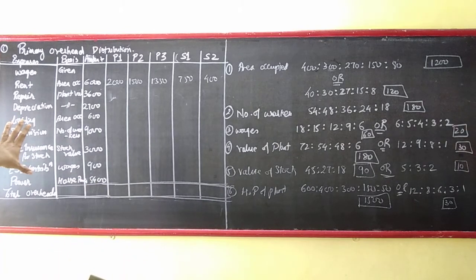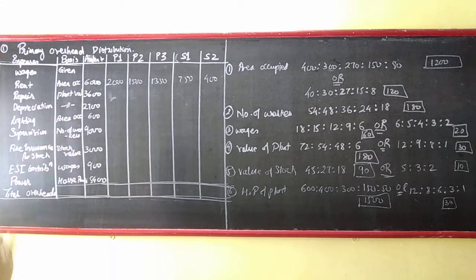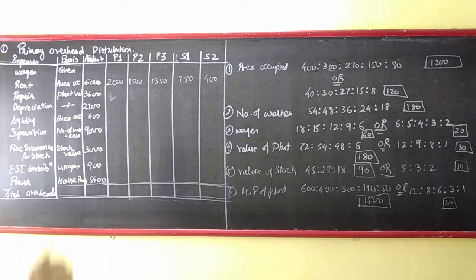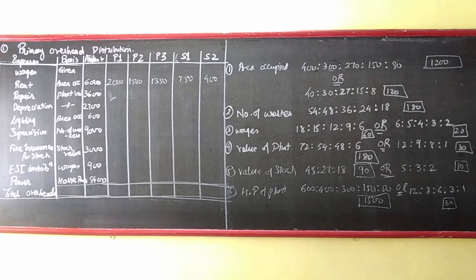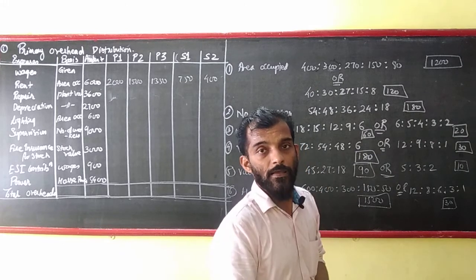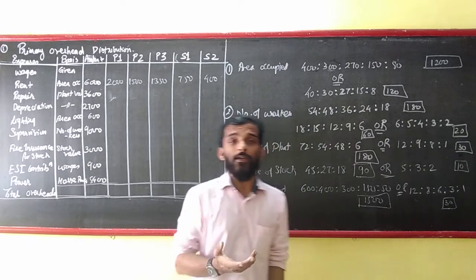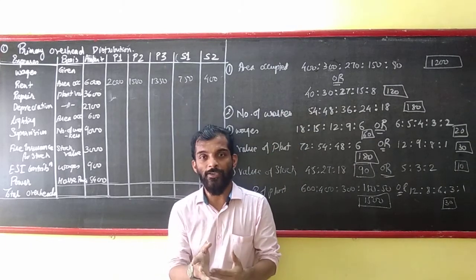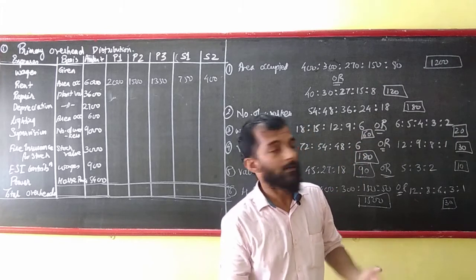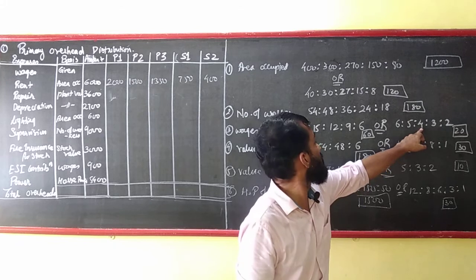Just in this way, based on which we will divide ratios, we will just fill in the blanks. Wages are given as: 18000, 15000, 12000, 9000, 6000. So 18, 15, 12, 9, 6.